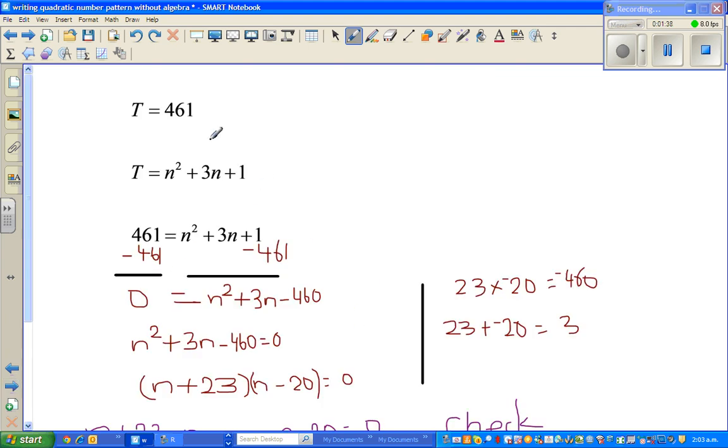So the question is T is 461 and we know T is equal to N squared plus 3N plus 1. This is what we saw in the last video. So now we have to solve this. So now I've substituted T as 461 in place of T.